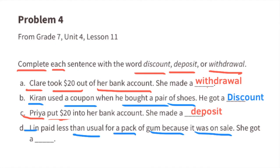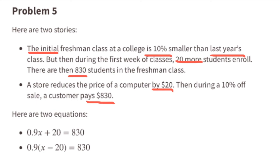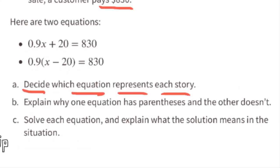Problem number five. Here are two stories: The initial freshman class at a college is ten percent smaller than last year's class, but then during the first week of classes, twenty more students enroll. There are then 830 students in the freshman class. A store reduces the price of a computer by twenty dollars. Then during a ten percent off sale, a customer pays eight hundred thirty dollars. Here are two equations. Part a: Decide which equation represents each story.